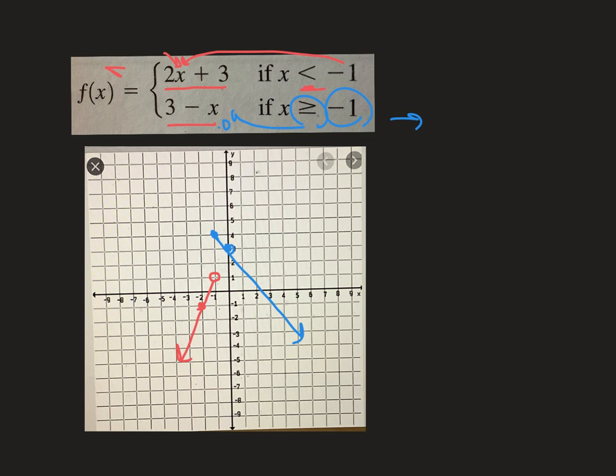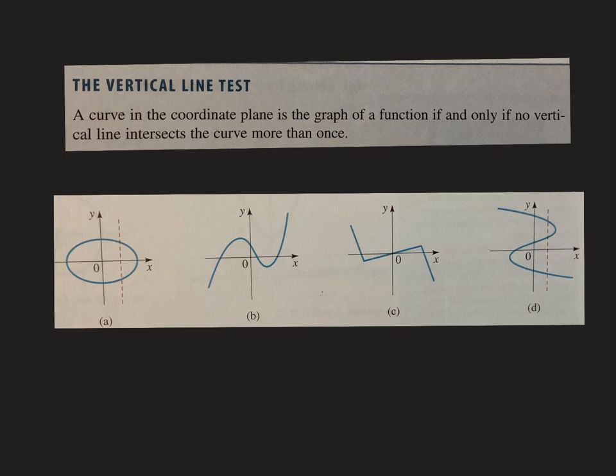So again, you draw a piece of each function. That's all you're doing on a piecewise graph. And start by using those numbers. It makes it so much easier. All right. Last thing. Vertical line test.